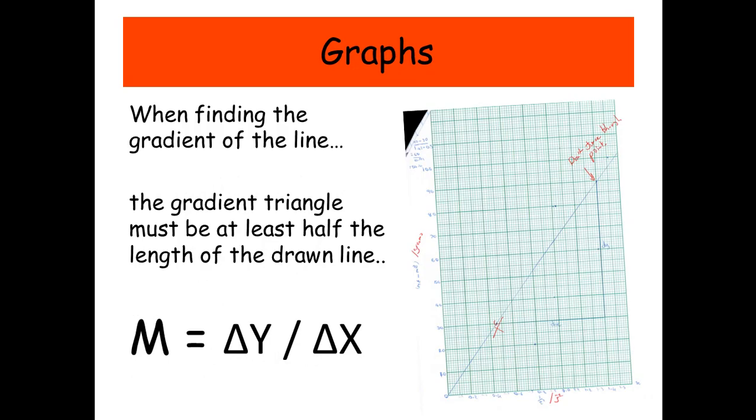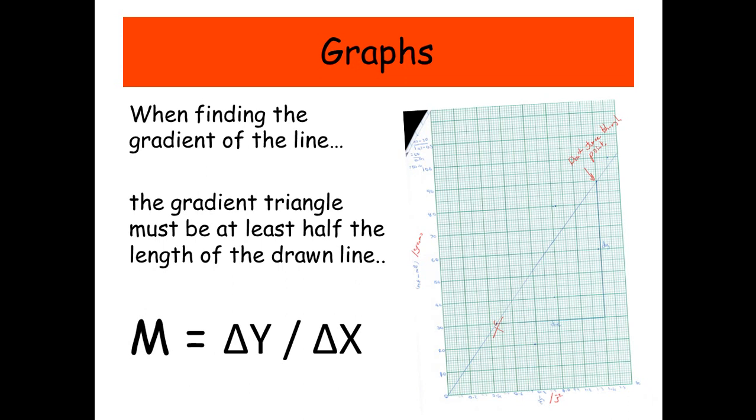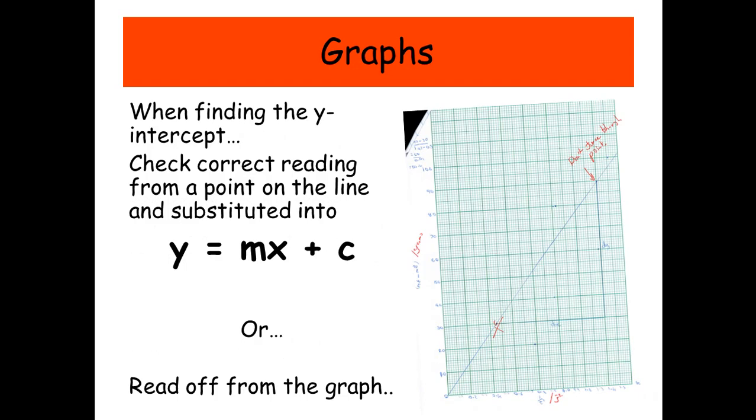The next thing you're asked to do is probably go back a page and you're going to have to find the gradient. Now make sure your gradient triangle is at least half the length of the drawn line. And then you're going to use delta y over delta x to find the gradient. And then you're often asked to find the y-intercept. And there's two different methods you can do that.